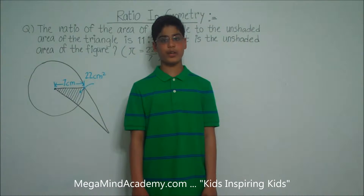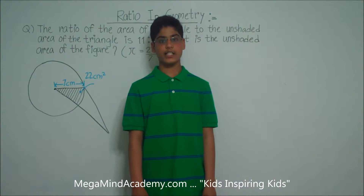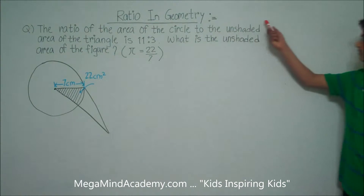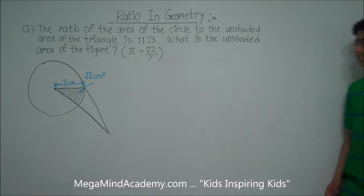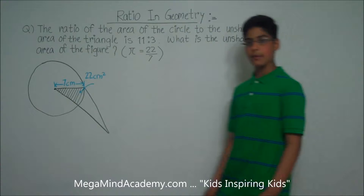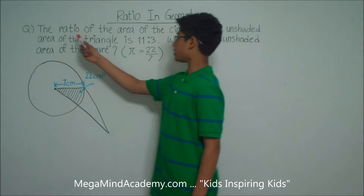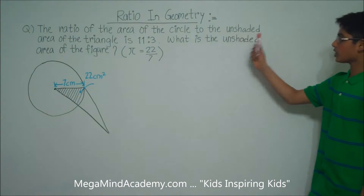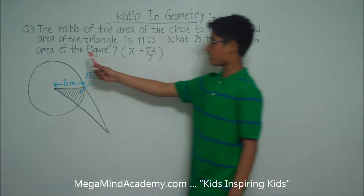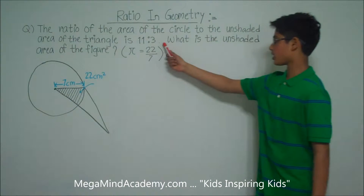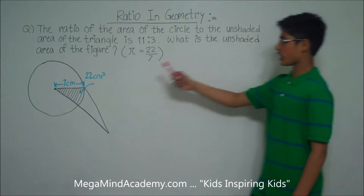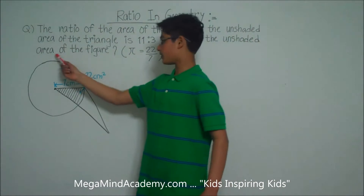Hi! Today we're going to learn about Ratio in Geometry. Let's say we have a problem like: the ratio of the area of the circle to the unshaded area of the triangle is 11 to 3. What is the unshaded area of the figure?